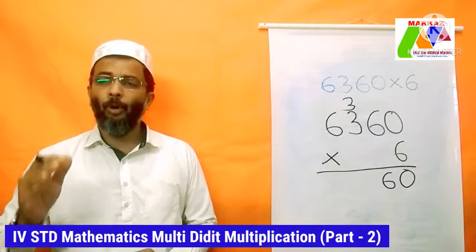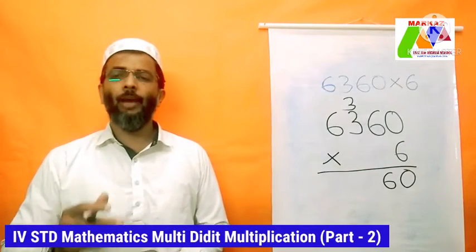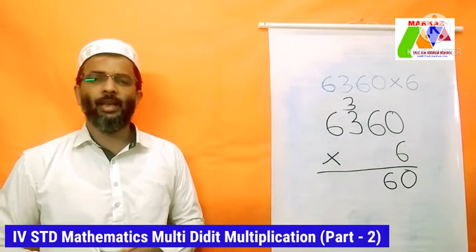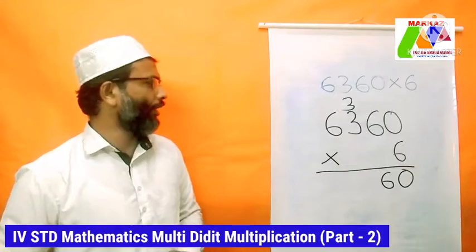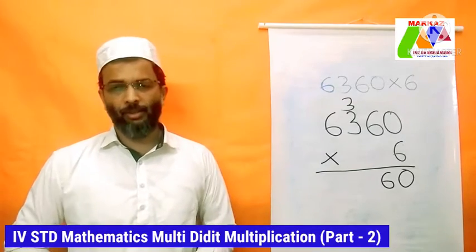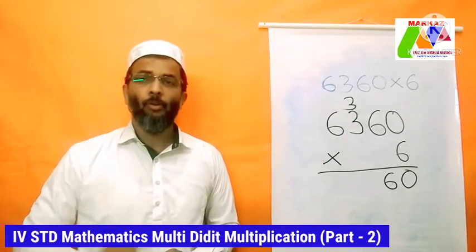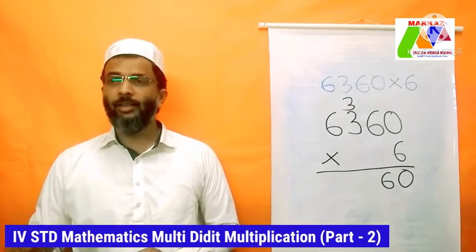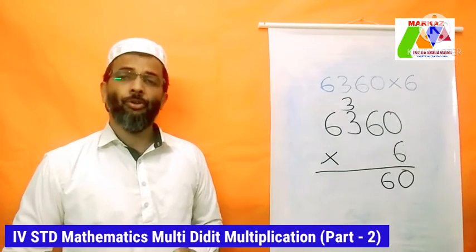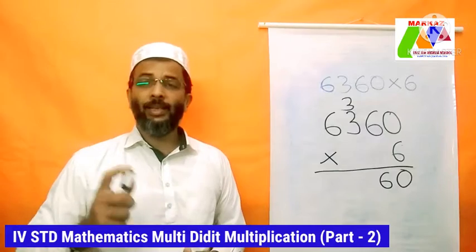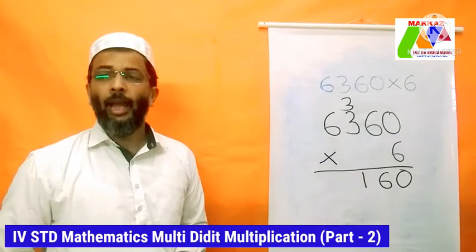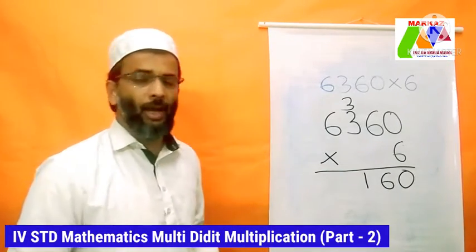Third step: multiply the bottom digit by the next digit to the left — 6 × 3 = 18. And there is that carried 3 from the last answer. We need to add it to the answer we just got: 18 + 3 = 21. Our answer is a two-digit number, so we leave the 1 in our answer line and carry the 2 up to the top of the thousands place column.